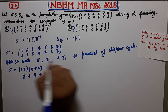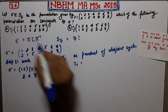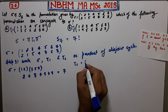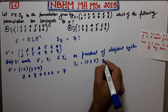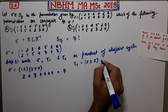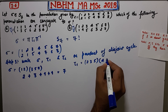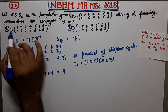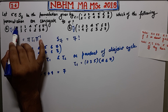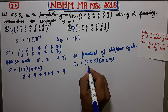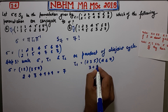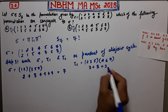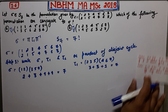Now let us decompose τ1. Writing τ1 as a product of disjoint cycles gives (2 3 5)(4 6 7), and the element 1 is fixed. So the cyclic structure of τ1 is 3 + 3 + 1, which is also a decomposition of 7.